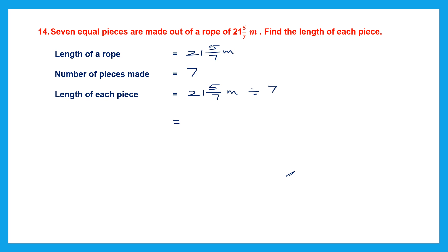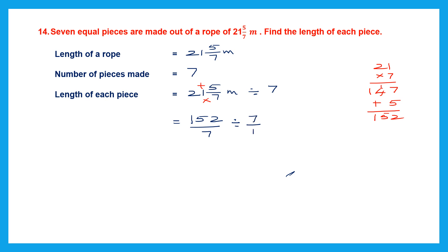Let's do this division. First step: convert 21 and 5 by 7 to an improper fraction. 21 into 7: 7 ones are 7, 7 twos are 14, then add 5 — 7 plus 5 is 12 carry 1, 4 plus 1 is 5. So that is 152. So we have 152 by 7 divided by 7 by 1. Division changes to multiplication: 7 by 1 becomes 1 by 7. There's nothing to cancel, so we multiply the numerators to get 152 and the denominators: 7 sevens are 49.